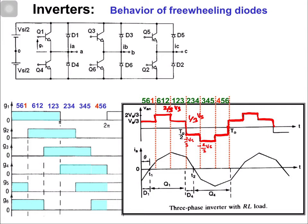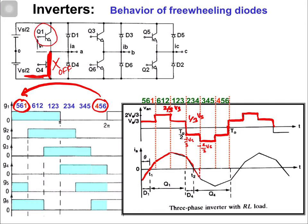The current waveform starts at a certain angle theta for the inductive load. Now let's suppose we are at switching state 4, 5, 6 and we are moving to switching state 5, 6, 1. Initially in phase A, switch Q4 was on. Now we are going to turn it off and turn on switch Q1.